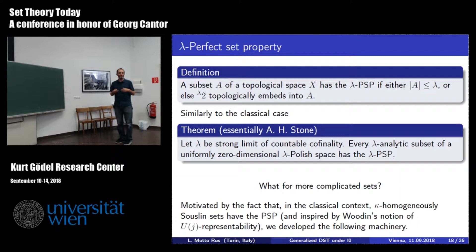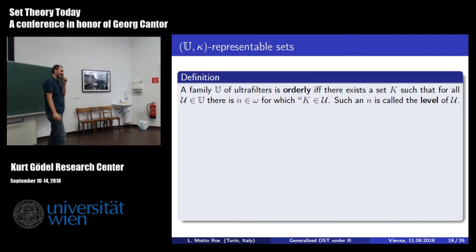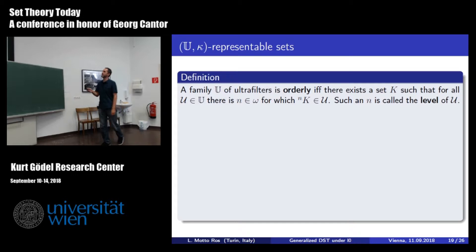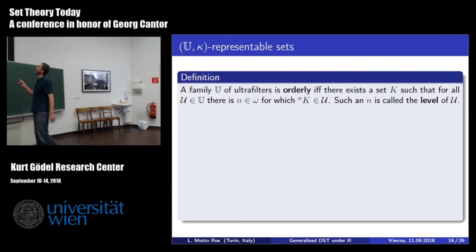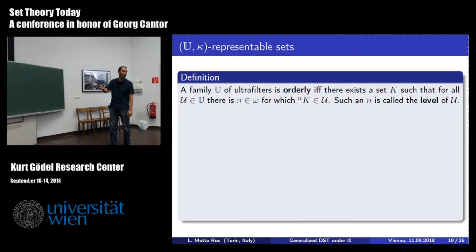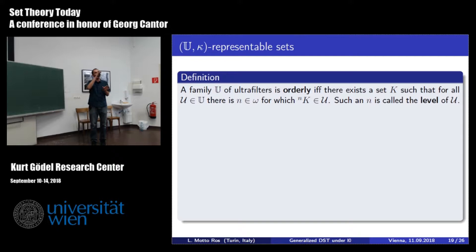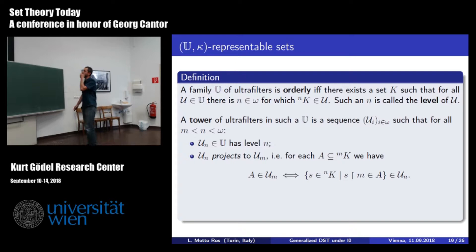Noticing this, we started working with the same technique used in the 80s but at the level of I0. Here is the definition—it generalizes both kappa-homogeneity in the classical context and UJ-representability. We need some family of ultrafilters, and these must concentrate on finite powers of a certain fixed set kappa. Each ultrafilter concentrates on k^n for some n, which is the level of the ultrafilter. A tower of ultrafilters from such a family is a countable sequence of ultrafilters indexed by natural numbers, where the ultrafilter at position n must concentrate on sequences of length n, and if n > m, the filter on top must project onto the one below.